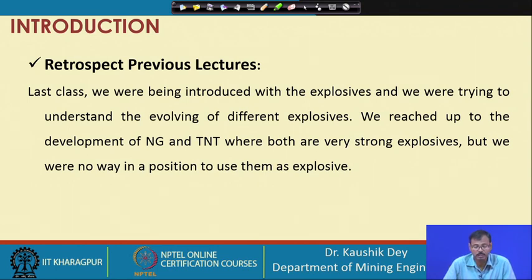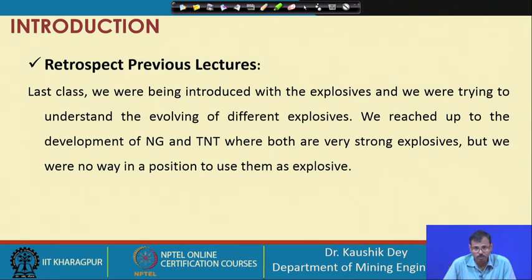However, we were in no position to use nitroglycerin and TNT as explosives because they are dangerous and not flame sensitive — we cannot initiate an explosion by providing a flame, and their sensitivity is very high. Their transportation and controlled explosions are problematic. Gunpowder, which is a low explosive, cannot serve our requirement where high strength is needed to fragment rock. We have knowledge of nitroglycerin, trinitrotoluene, and fulminating gold — very dangerous, strong, high-energy explosives — but we do not have the knowledge to use them in a controlled manner.